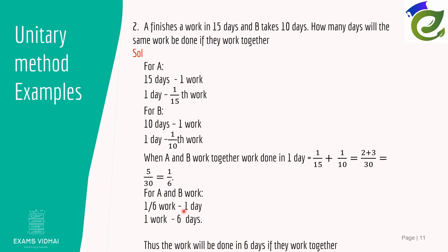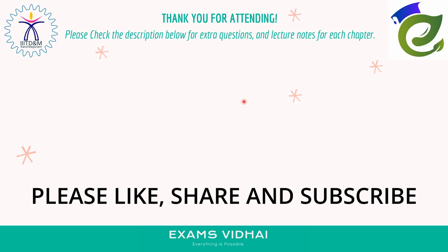Observe that for A and B individually the number of days (unknown) was written on the right-hand side, but for A+B working together the work per day was known, so the number of days was found by dividing. The work will be done in 6 days if A and B work together. Thank you for watching — please check the description box for extra questions, lecture notes, and the PPT for this chapter.